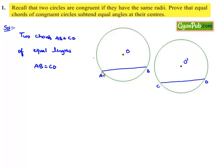Now we need to prove that angles subtended by them at the center must be equal, that is angle AOB is equal to angle CO'D.